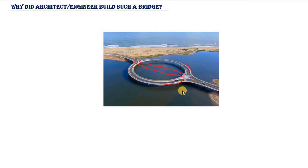The engineer also tries to ensure serviceability performance, meaning the structure doesn't deflect too much. Because the architect and engineer work together, sometimes the engineer also needs to consider aesthetic demands. If the architect says not to compromise the aesthetic, the engineer will find a way to make the structure safe while also meeting the aesthetic demand.